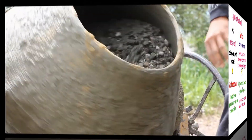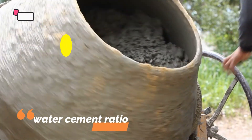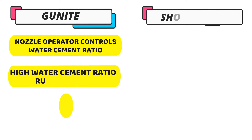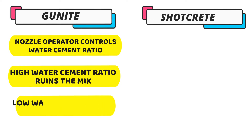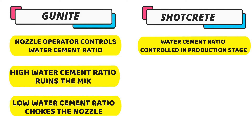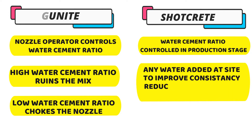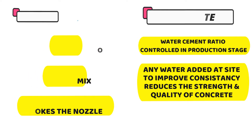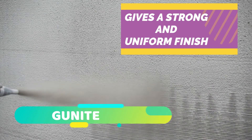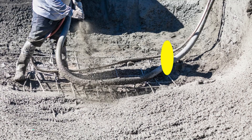Now we will discuss about the water-cement ratio. In the case of gunite, the nozzle operator controls the water-cement ratio. A high water-cement ratio can ruin the mix and a low water-cement ratio may choke the nozzle. But in the case of shotcrete, the water-cement ratio is controlled in the production stage. Any water added on-site to improve consistency reduces the strength and quality of the concrete. Gunite gives a strong and uniform finish, and shotcrete gives a strong and consistent surface.